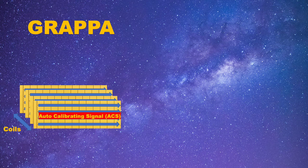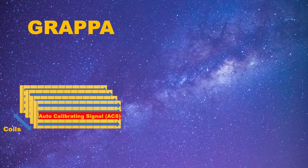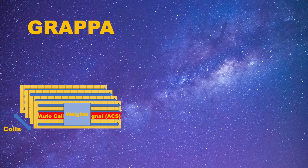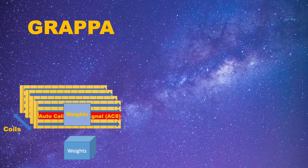After we acquire this ACS signal for each of the coils, we can use some mathematical operations to find the best rule to fit these missing points for the rest of the k-space, and we define this rule as a weight matrix. Notice this relationship between known points is across the coils, so the actual shape of the weights should be a cube, where the third dimension is the coil.